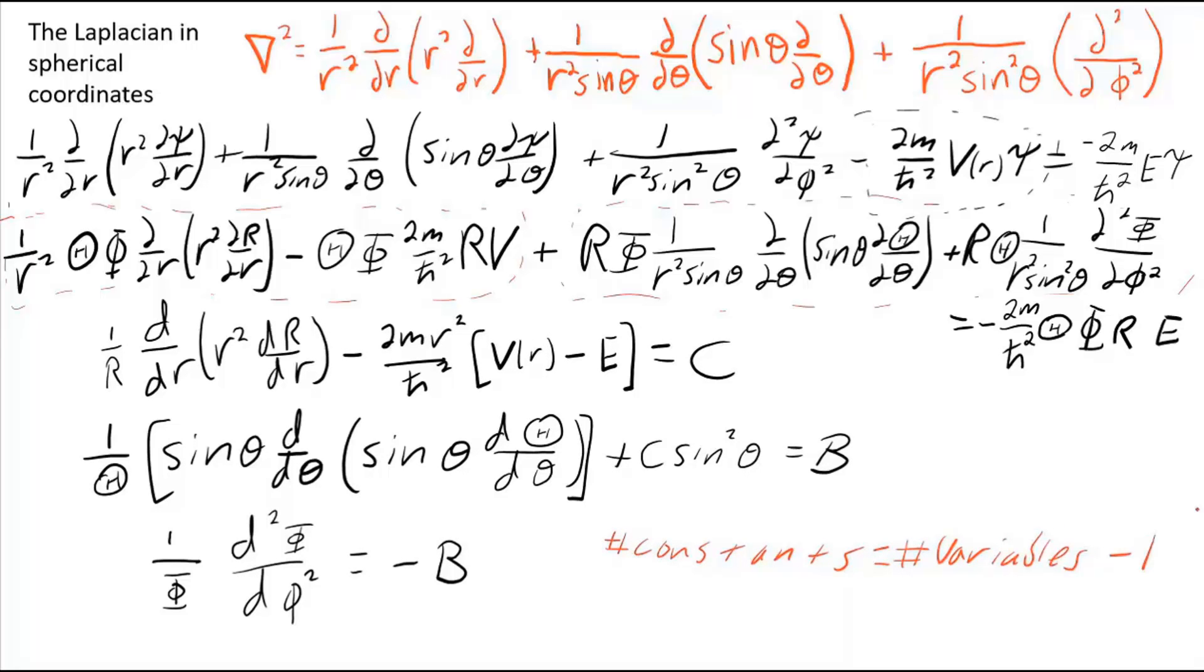We have three variables, r theta phi, and we have two constants, c and b. These two constants, c and b, are usually renamed for purposes of avoiding messes. C is usually renamed l times l plus one, where l is a constant.